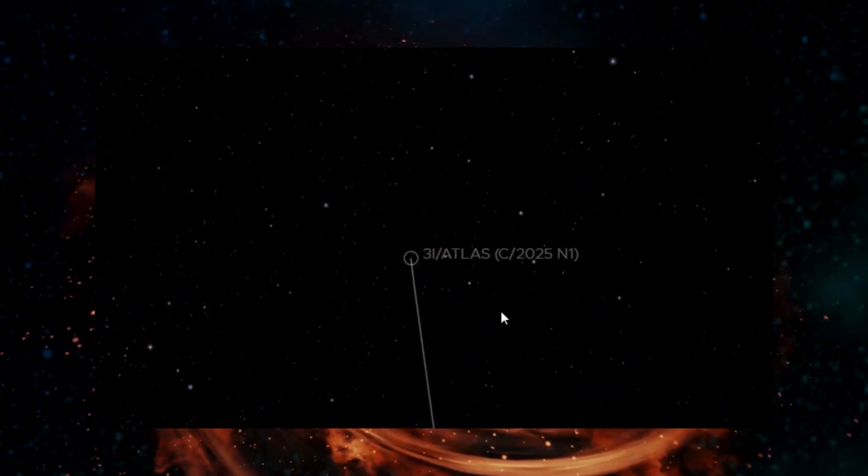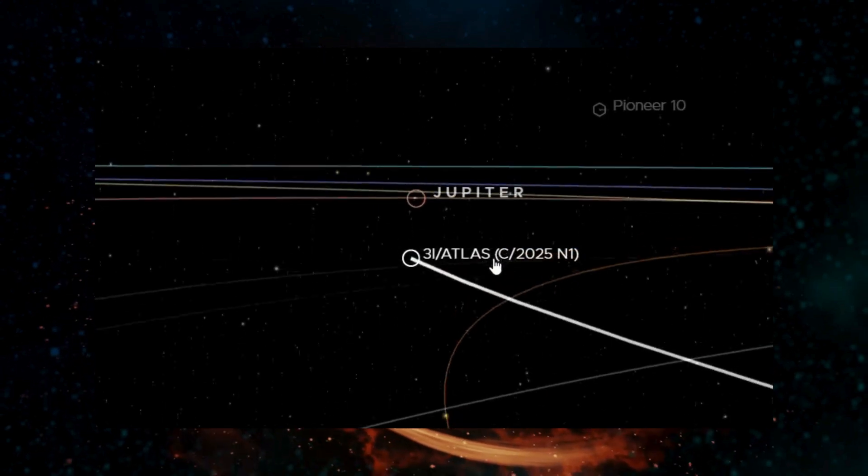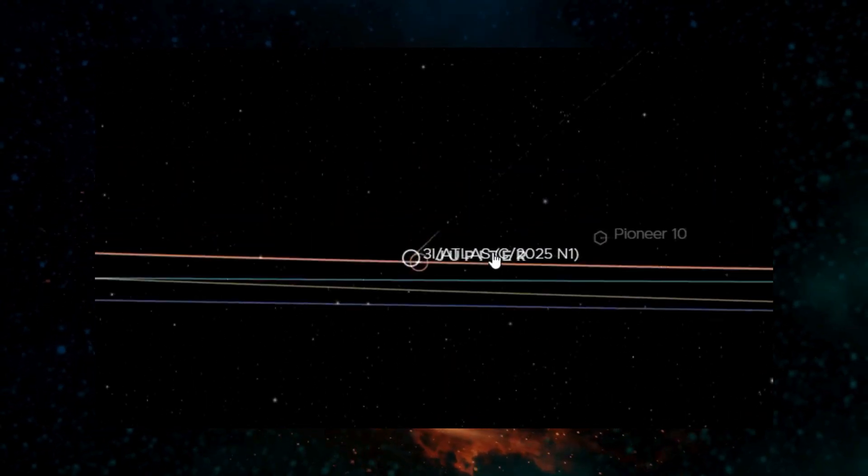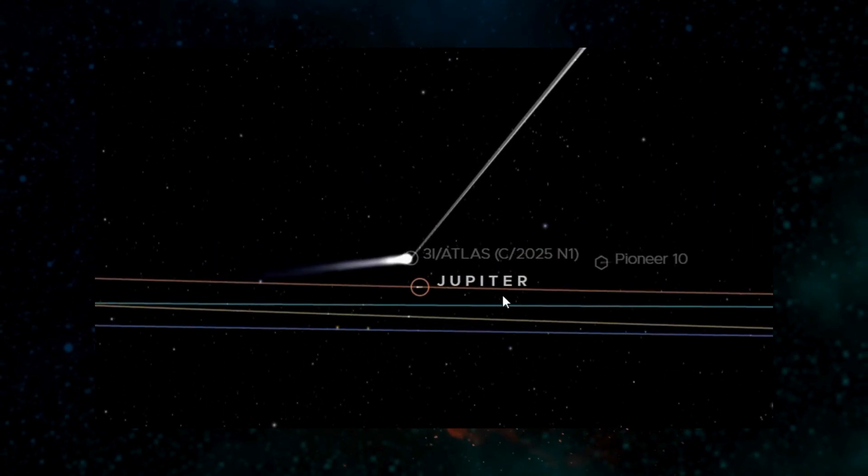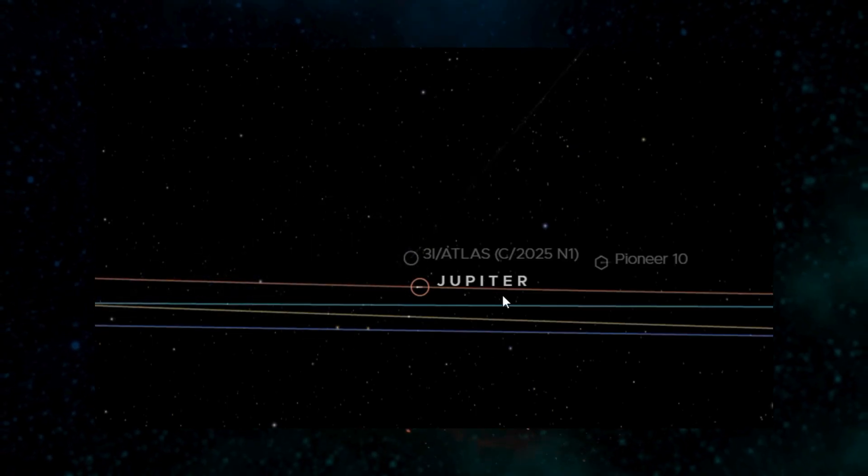Right now, 3i Atlas is moving steadily toward Jupiter, and on March 16th, 2026, barely four months from now, it'll make its closest pass.